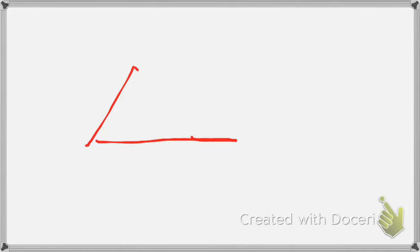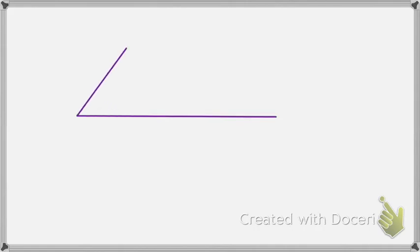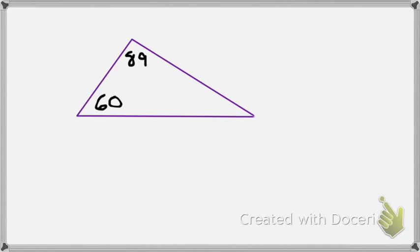So let's draw an acute scalene triangle. To do that, acute means all three angles have to be less than 90, right? So let's just draw it so it's almost 90, but instead of being 90, it'll just be a little bit off. So there's my acute triangle. I could say this would be 89 degrees, this would be 60 degrees, and this would be 31 degrees — so it's acute.